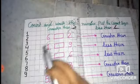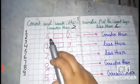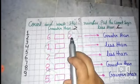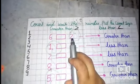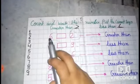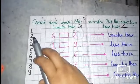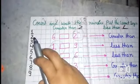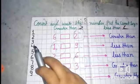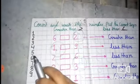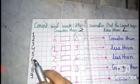Let's see the exercise. We have two numbers: six and two. Two is smaller and six is bigger. Let's count: one, two — two comes first. Three, four, five, six — six comes after two.